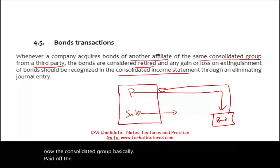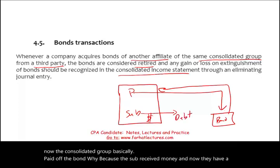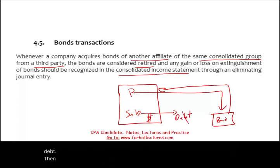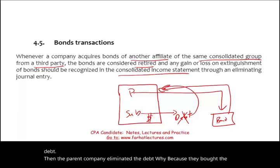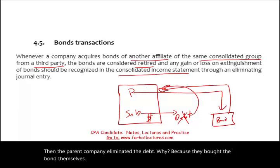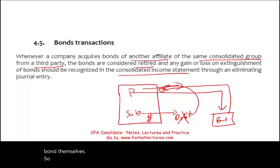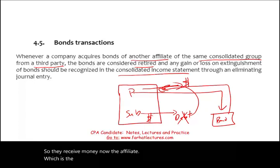The subsidiary received money and now has a debt. Then the parent company eliminated that debt by buying the bond themselves. So the parent receives the bond, and the affiliate — the parent company — has effectively paid off the debt.